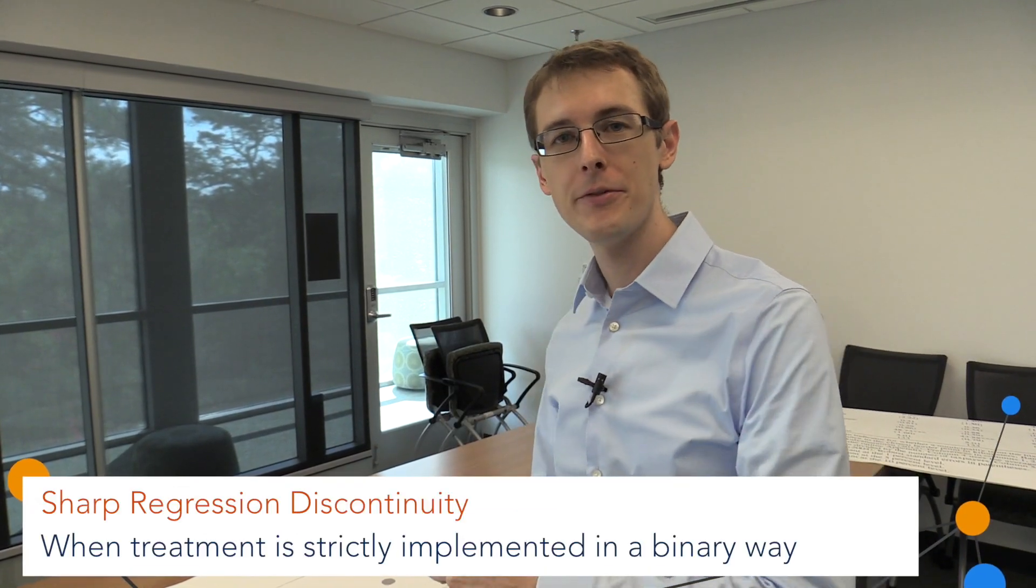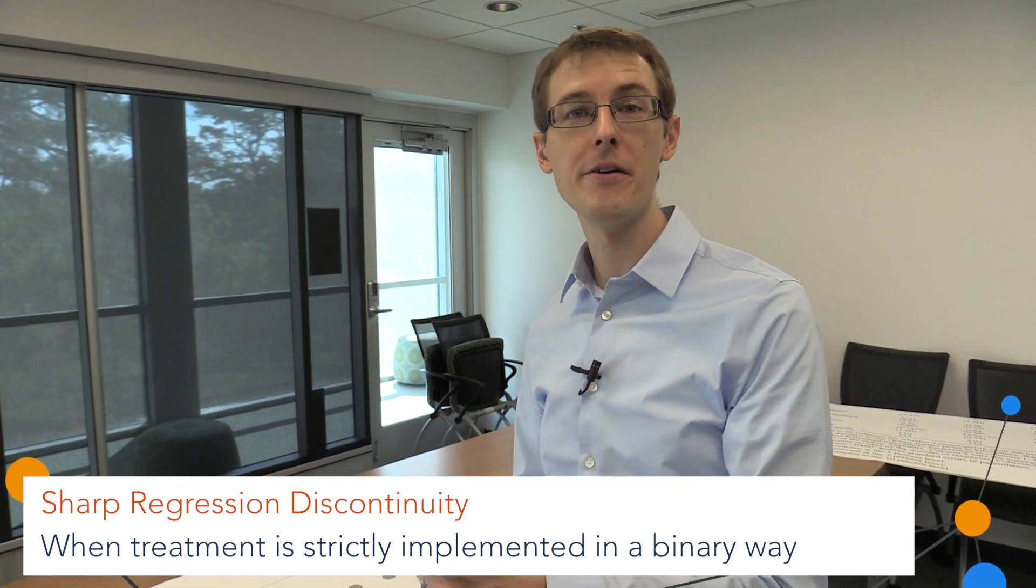There are actually two different kinds of regression discontinuity designs. The ones we've talked about so far are called sharp RDDs, because if you're on one side of the cutoff, you always get treated, and if you're on the other side of the cutoff, you never get treated.